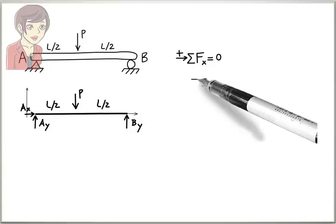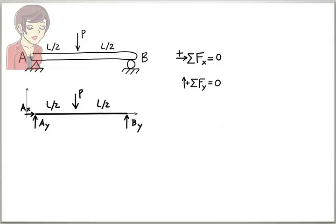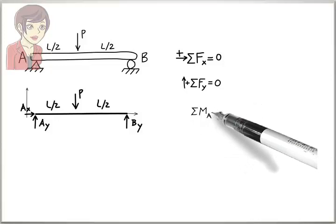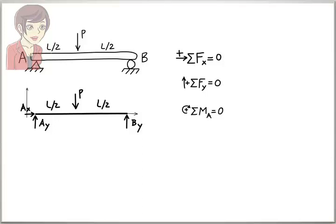Two, sum of the forces in the y-direction must be zero. Three, sum of the moments about the z-axis at, say point A, must be zero. The first equation in the expanded form gives us Ax equals zero.